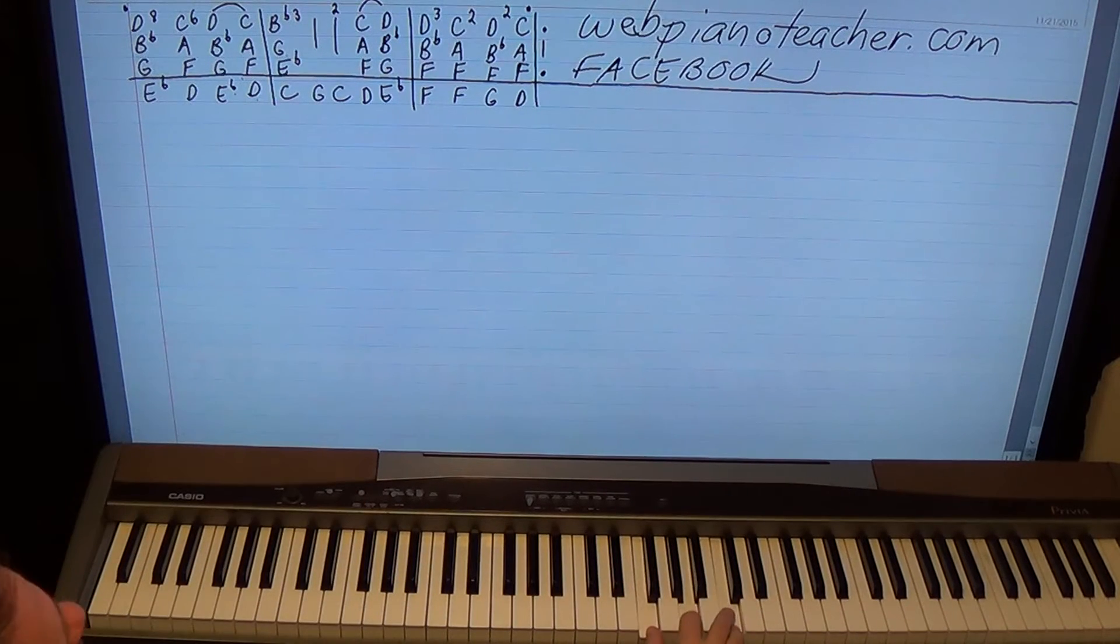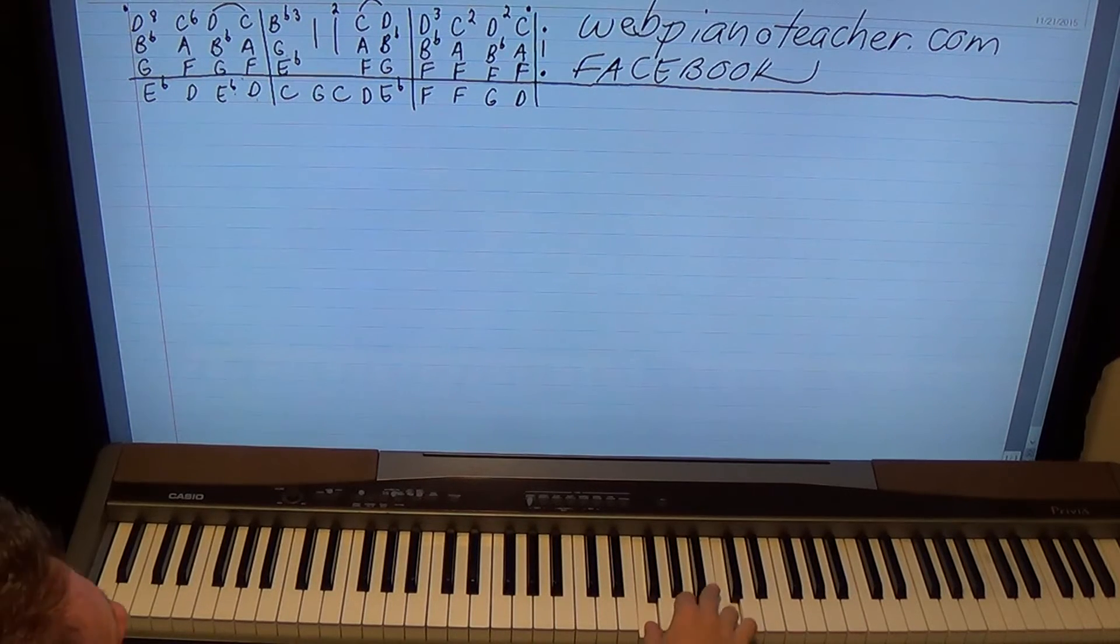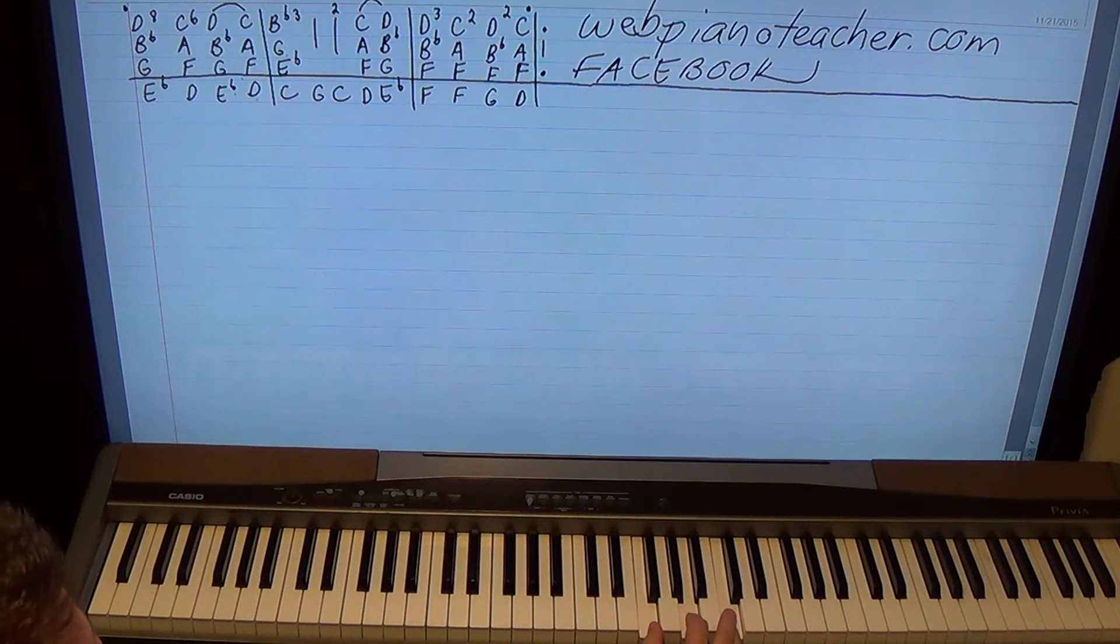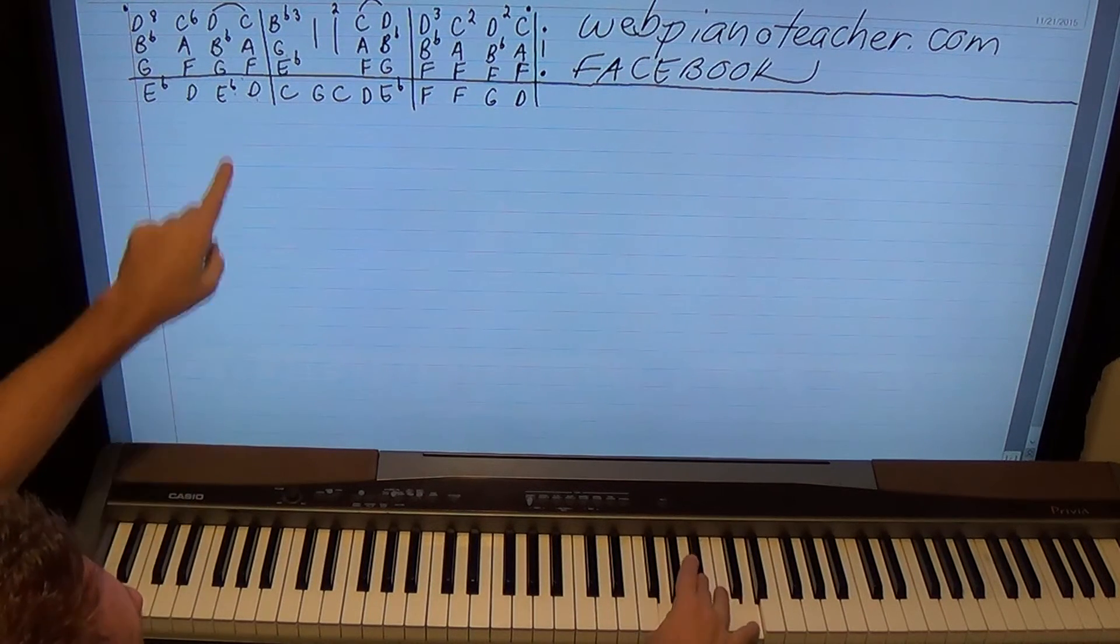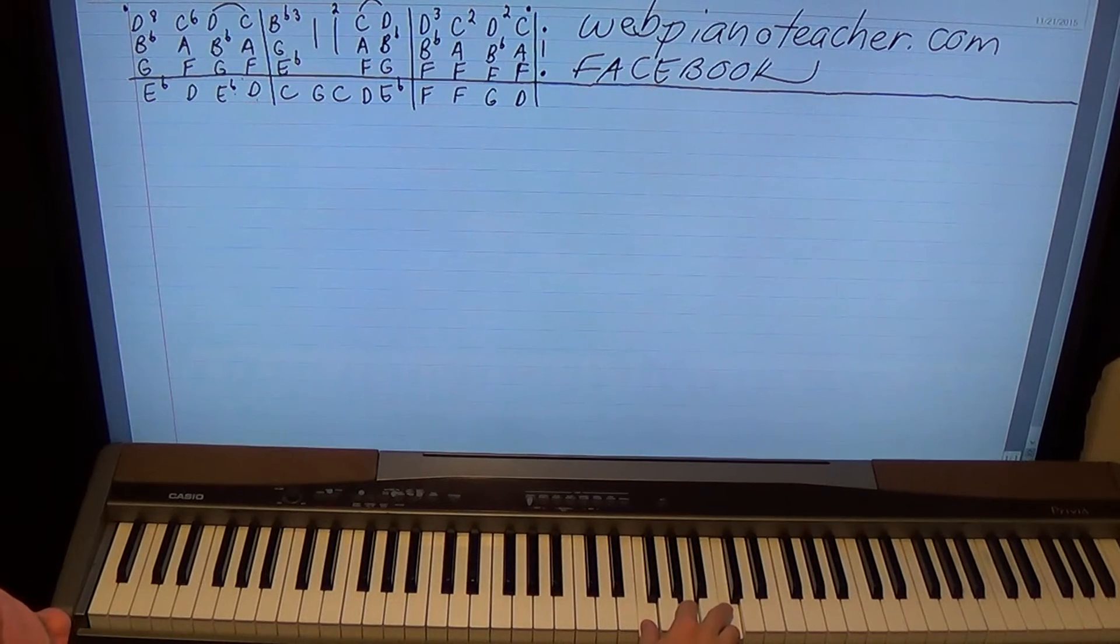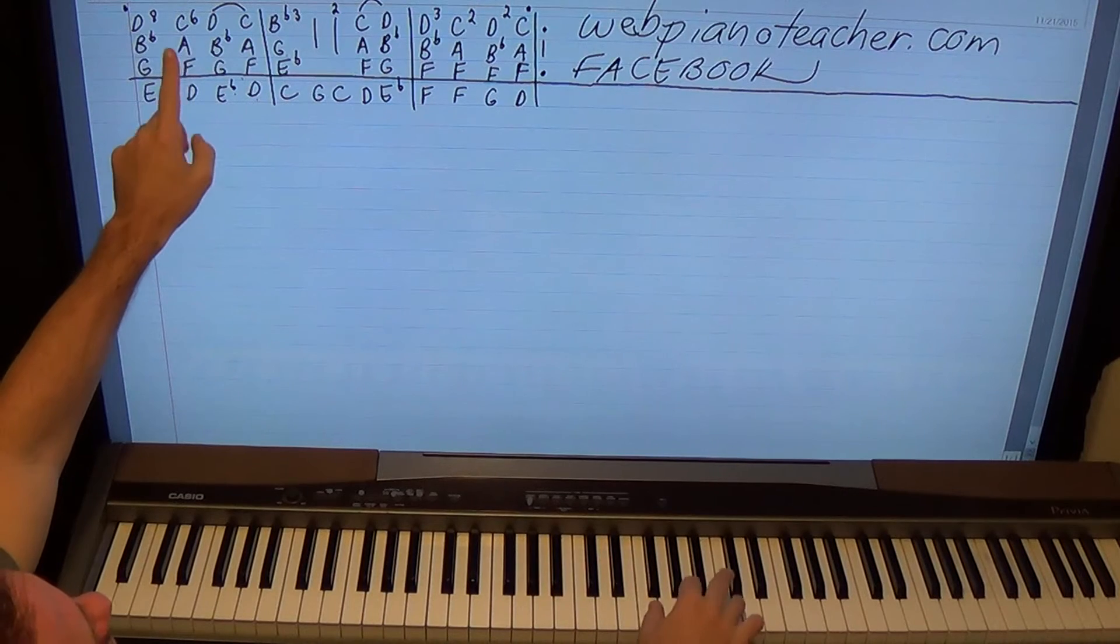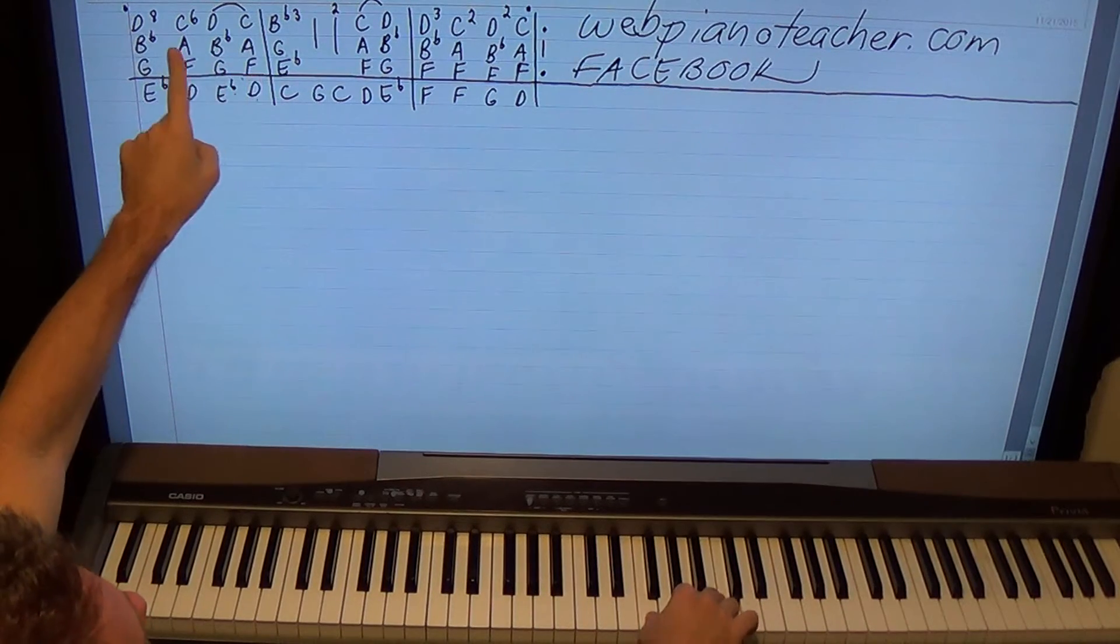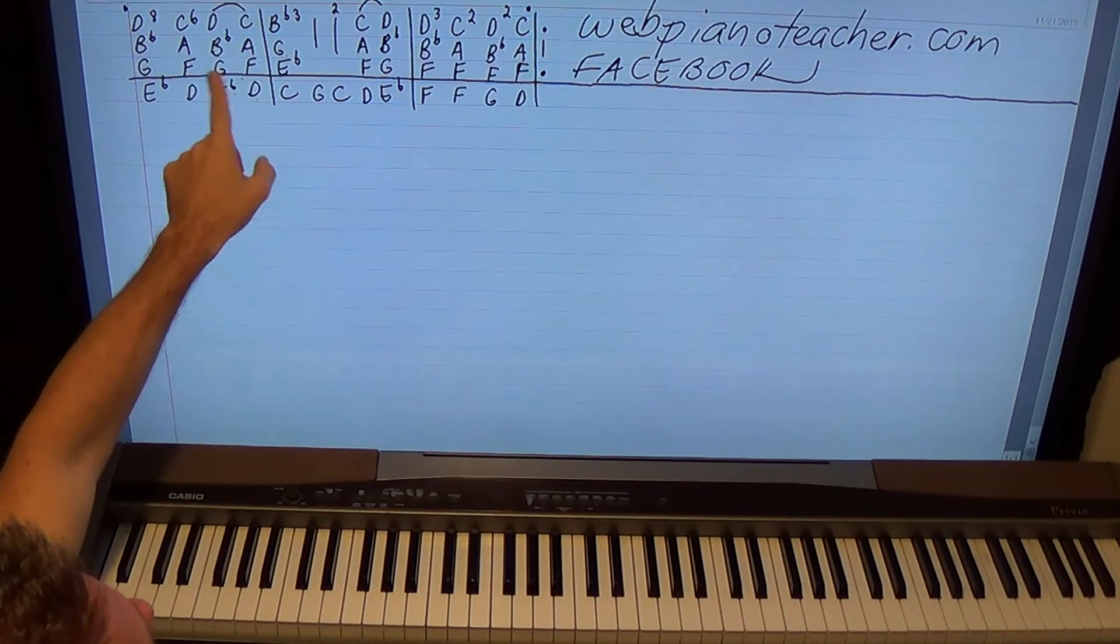Now the next chord is an F chord. F, A, C. And I'm going to play it with one, two, four. Because I'm going to have to go to G, B flat, D and then back to F, A, C. So it'll work fingering wise better to go one, two, four and then one, three, five. So for fingering sake is why I'm doing one, two, four. And then these are faster. Well, they're not faster. They're just four, five, six, one, one. They're just one time.